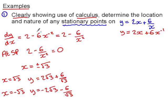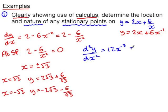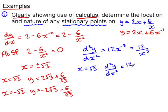I'm also asked to describe the nature of the stationary points, and for this I need the second derivative. Taking dy/dx, the second derivative is 12x to the negative 3, which is 12 over x cubed. I need to look at the value of the second derivative for each of the two x values. When x is positive root 3, the second derivative is 12 over root 3 cubed. I don't need to work this out exactly — I just need to know if it's less than or greater than zero.